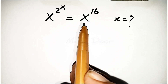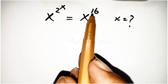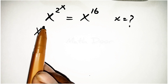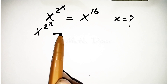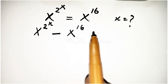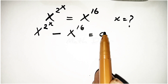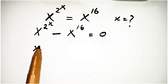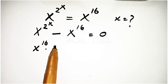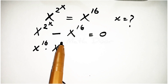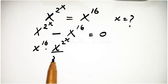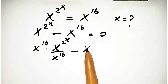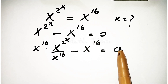First of all, we take x power 16 to the left side of the equation. So our left side becomes x power 2 power x minus x power 16 is equal to 0. We will write this x power 2x as x power 16 times x power 2 power x over x power 16 minus x power 16 is equal to 0.